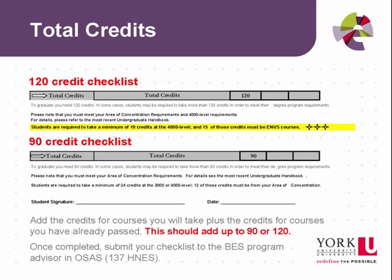Once you've gone through all of the sections in the checklist, total the columns and submit the completed form to your advisor. We've gone through the entire checklist, and I hope you found this video helpful. Completing the program checklist helps you stay on track in the BES program, so please make sure you follow the guidelines and submit it for approval by the mid-May deadline. Thanks for watching, and we wish you the best of luck during this year.